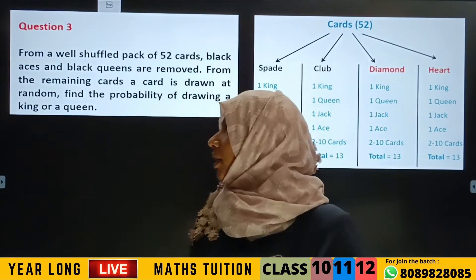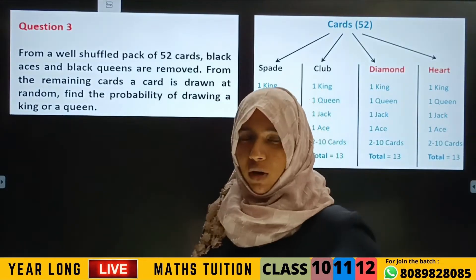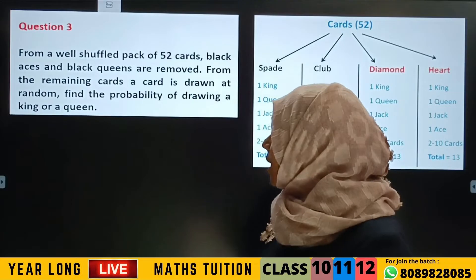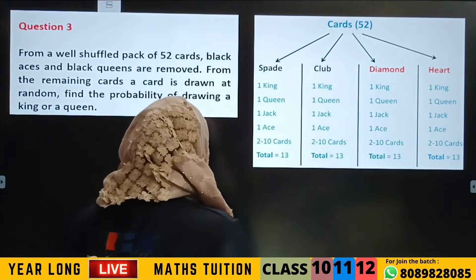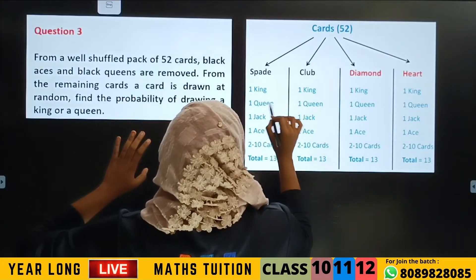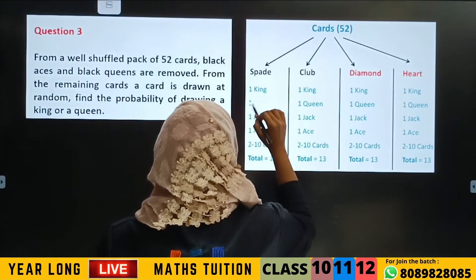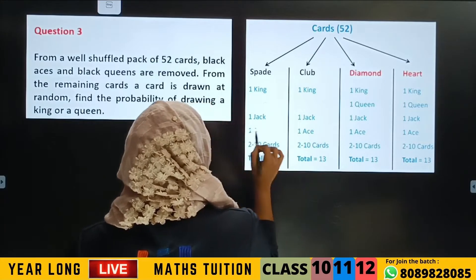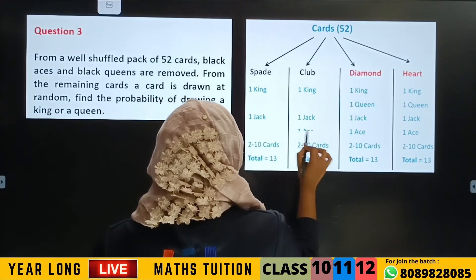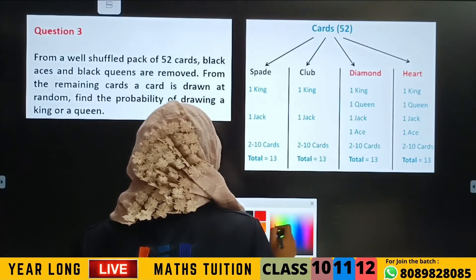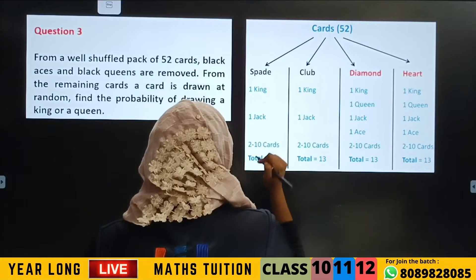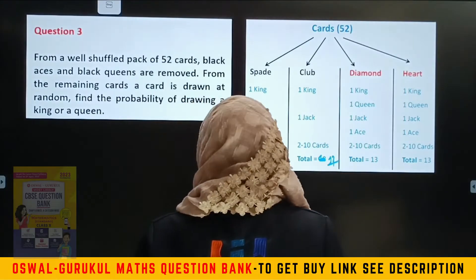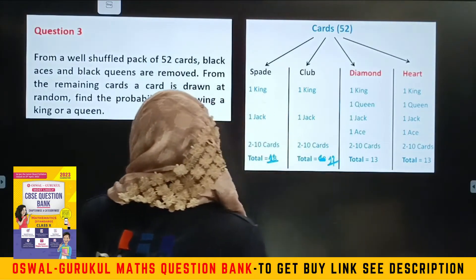Let us move to the third question. From a well-shuffled pack of 52 cards, Black Aces and Black Queens are removed. So I will remove them — black queens from spade and club, and black aces from spade and club. Then we find the remaining cards to determine the sample space.